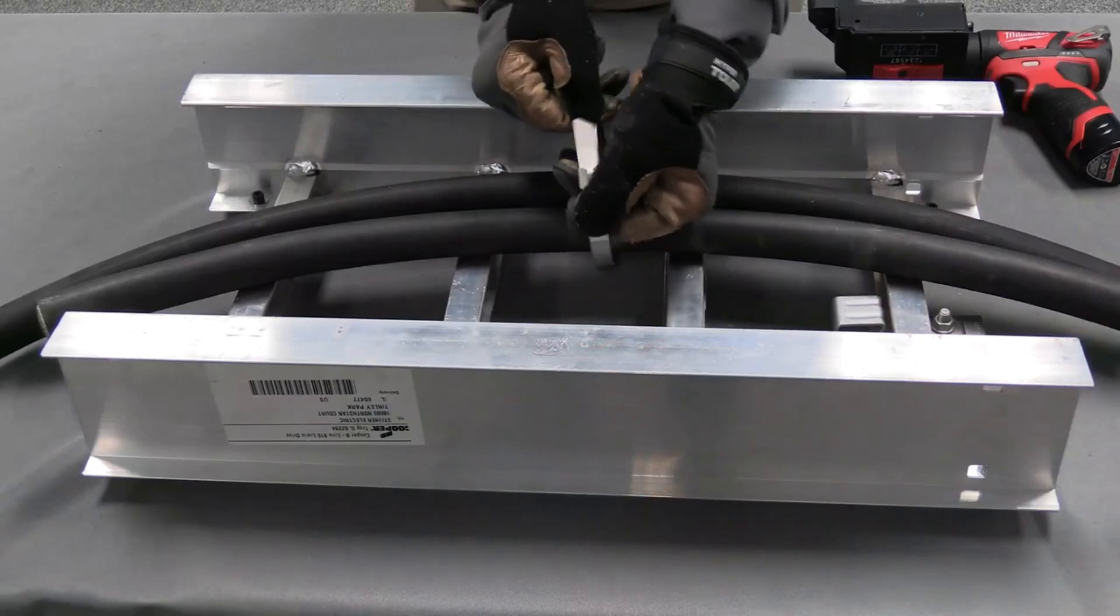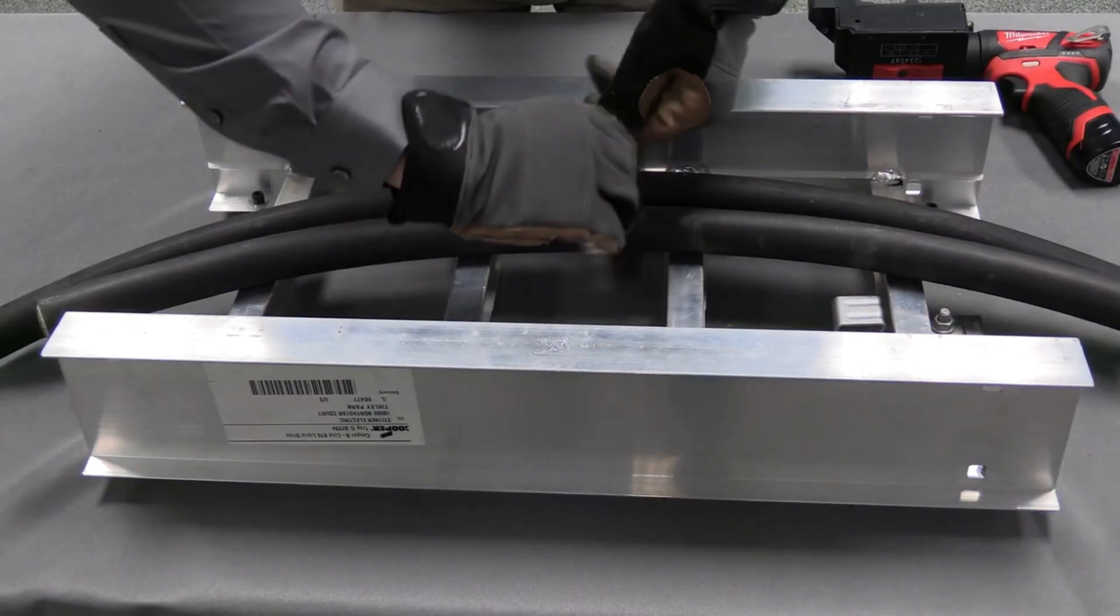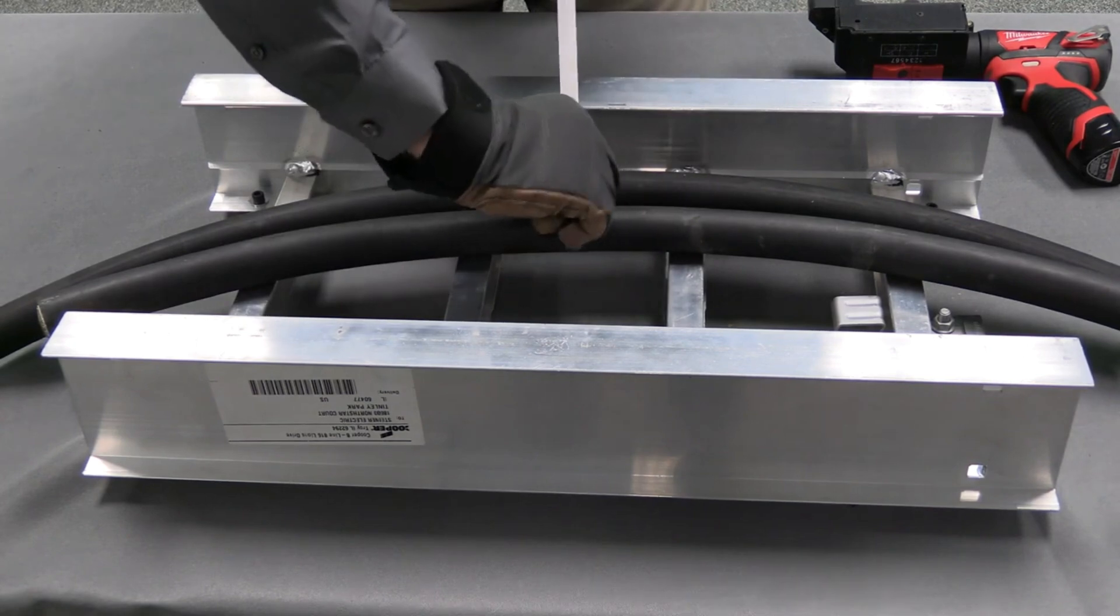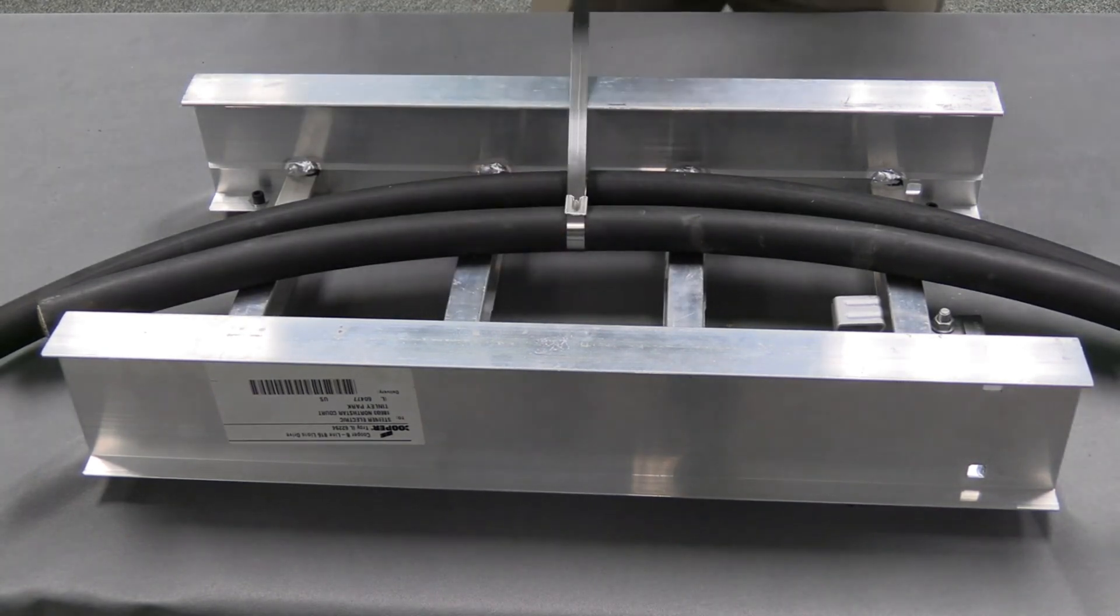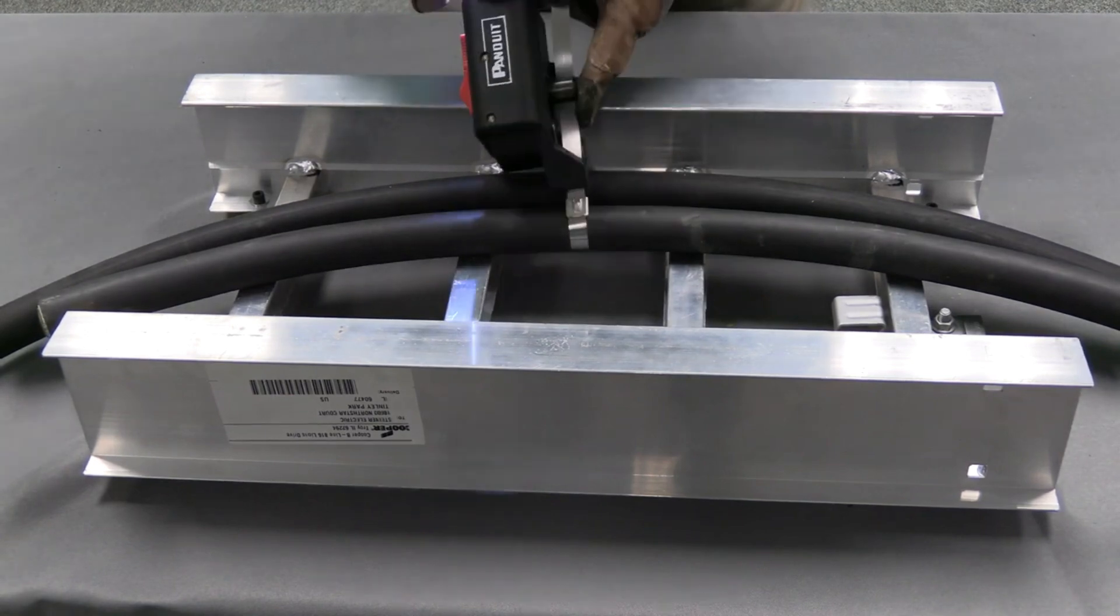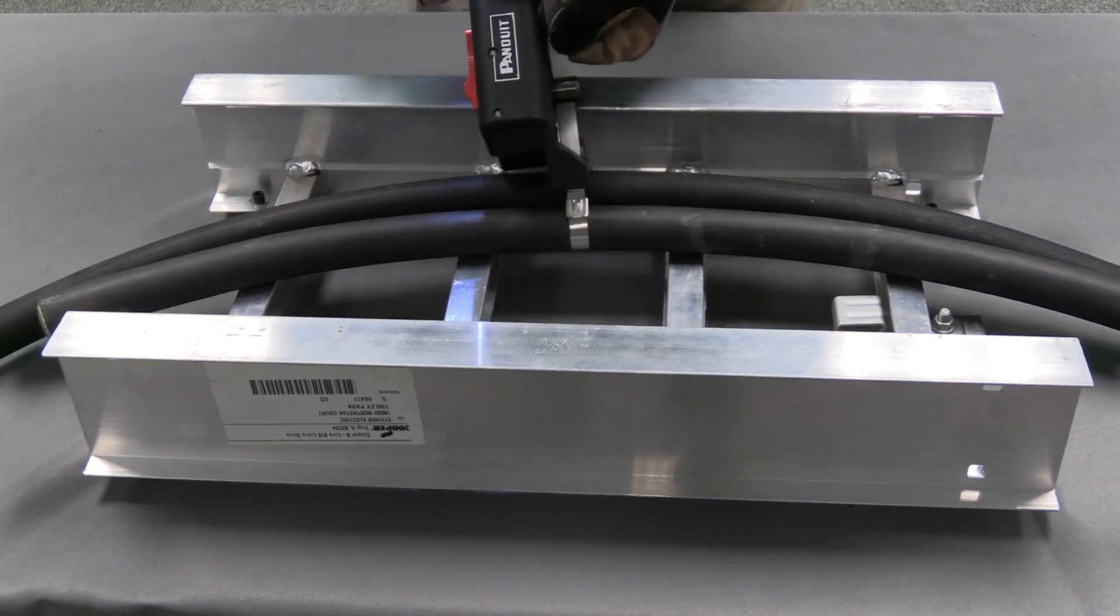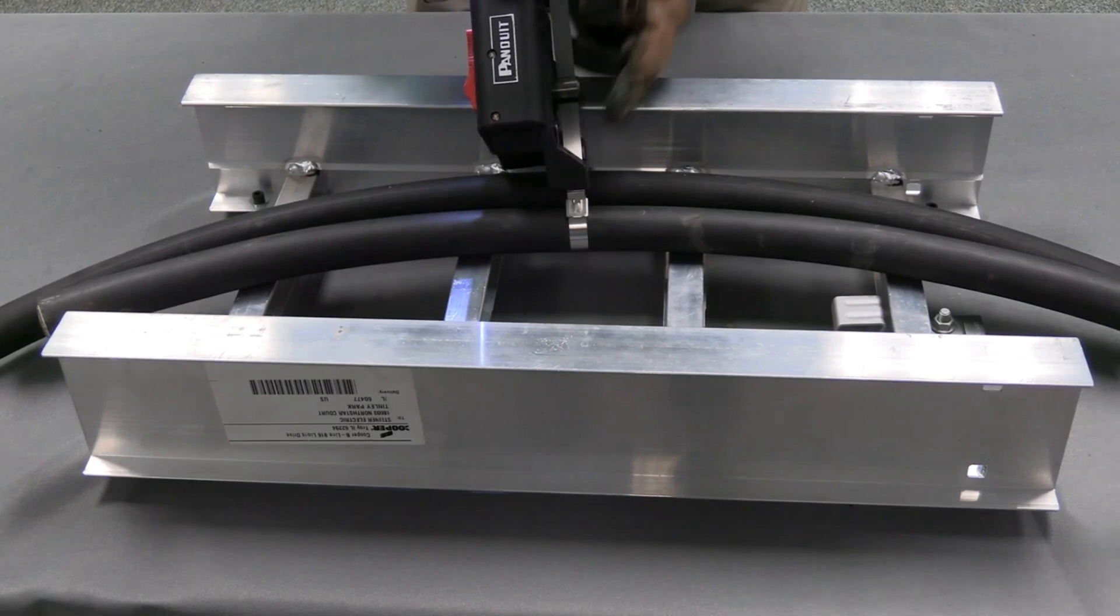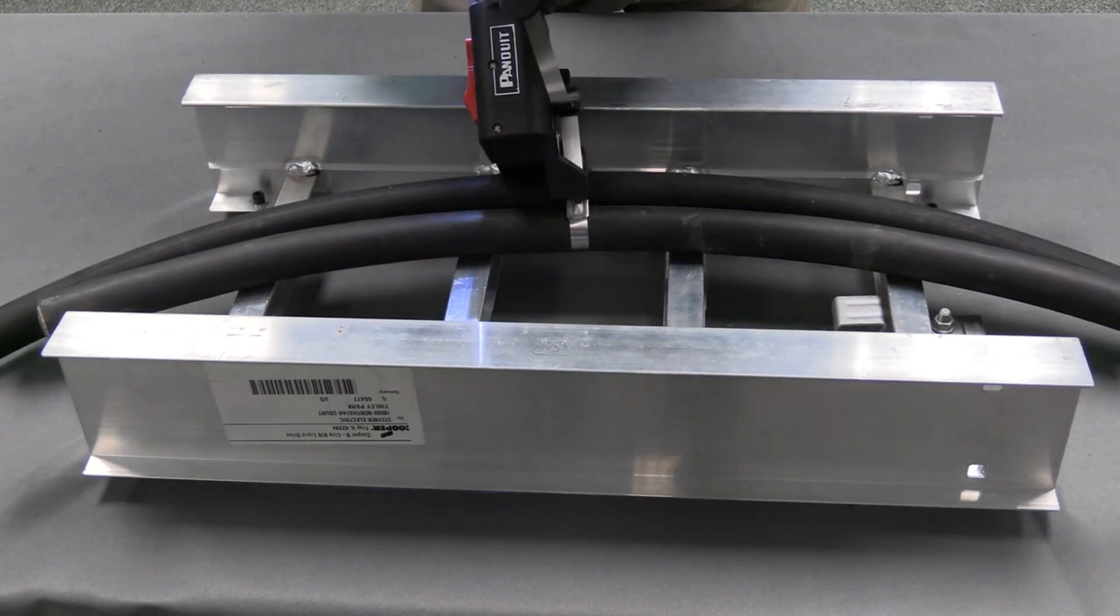So we'll wrap the tie around and thread it through the head. Typically, you'll see cushion sleeving alongside this application at various intervals. First, you'd slide the excess strap through the cutting blade and then into the rotating spindle and simply pull the trigger.